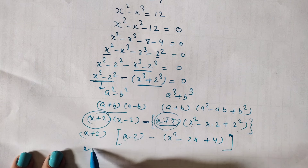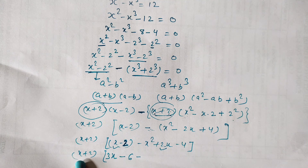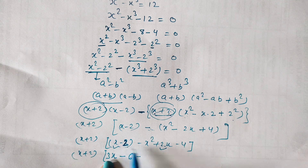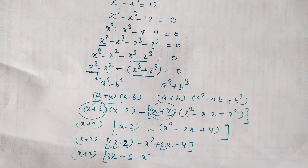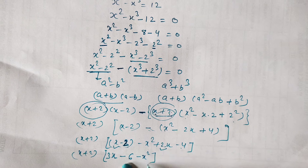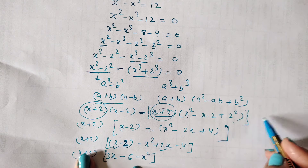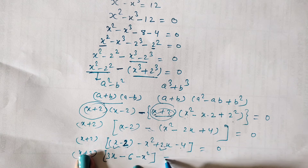The x plus 2 outside remains the same. Now we simplify the expression inside. x and 2x are like terms, so x plus 2x becomes 3x. For the constants, minus 2 and minus 4 — both are negative, so minus minus gives plus, and 2 plus 4 gives minus 6. And for x squared there is no like term, so we write minus x squared as it is. The right hand side remains 0, so do not forget to write equals 0 at each step.